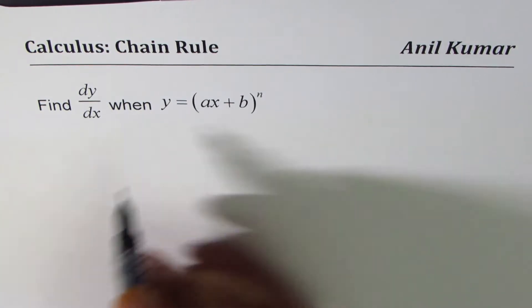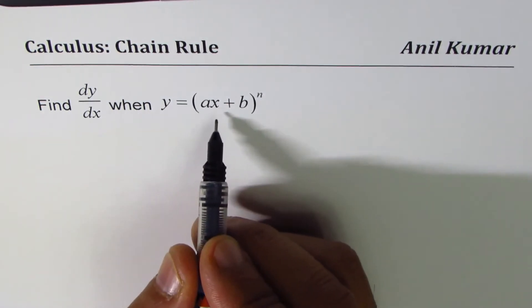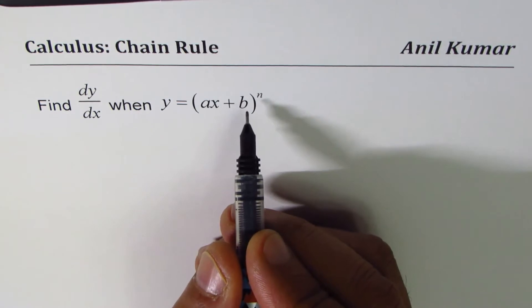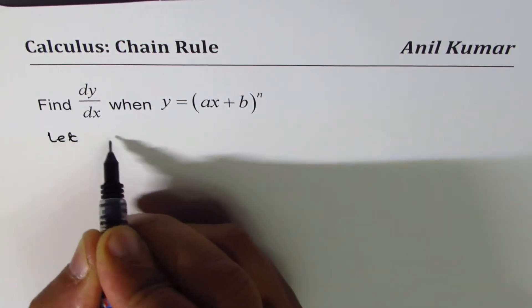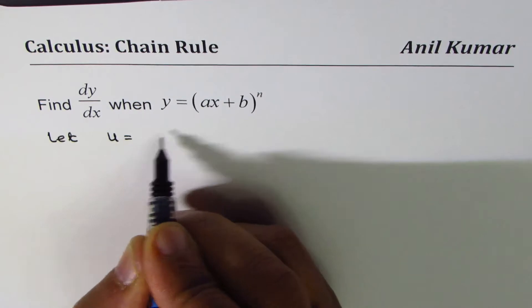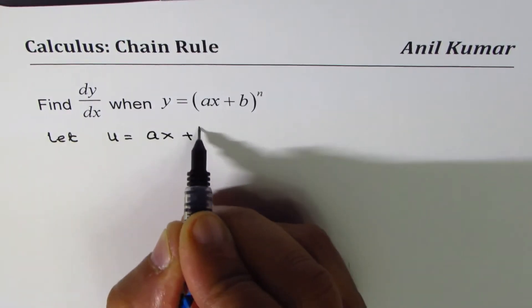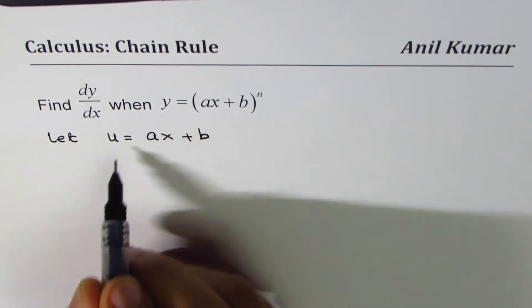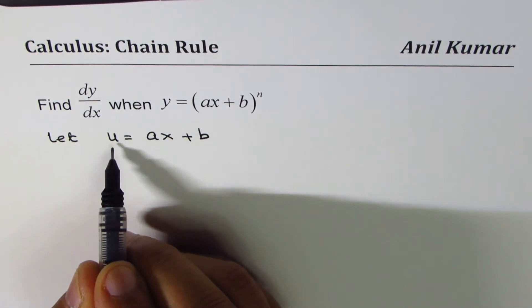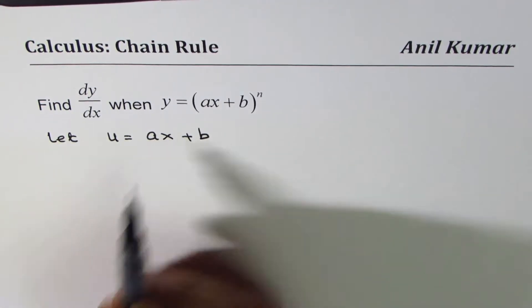So what we can do here is that we can introduce new variables. So we say let u equals to the inside function, which is ax plus b.